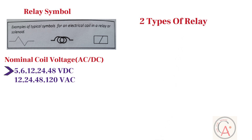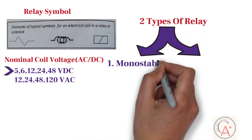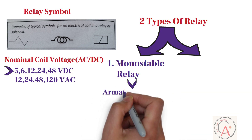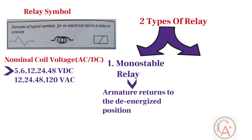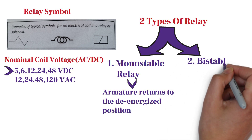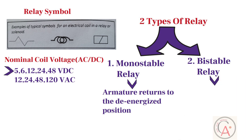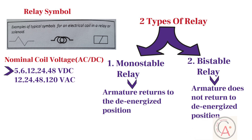There are mainly two types of relay. The first type is the monostable relay. In a monostable relay, the armature returns to the de-energized position when the coil voltage is removed. The second type is the bistable relay. In a bistable relay, the armature does not return to the de-energized position when the coil voltage is removed — in other words, the relay is latched on and needs another signal to reset the relay.